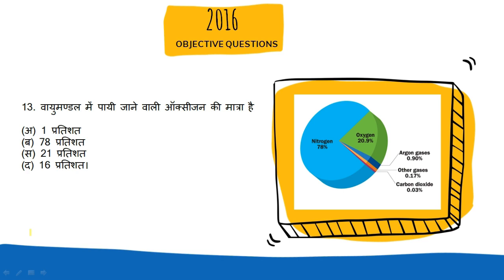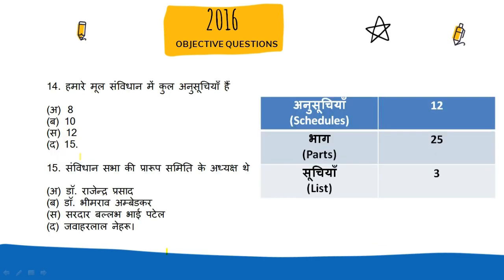The next question is about atmospheric composition. The correct answer is that oxygen makes up 21% of the atmosphere. You can see that oxygen is called 21%.